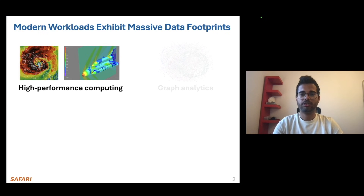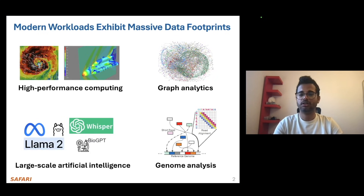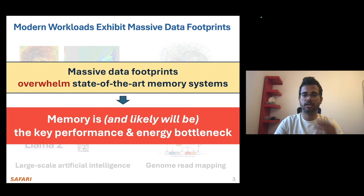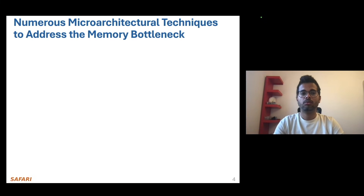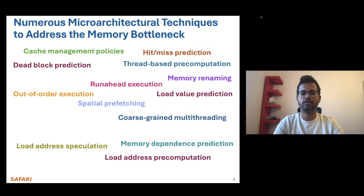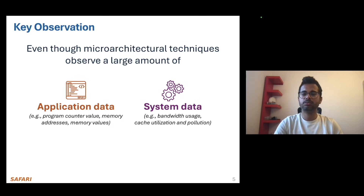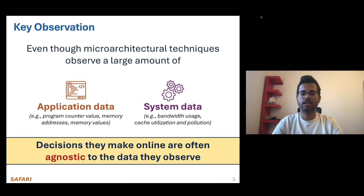Many modern workloads stemming from key application domains such as high performance computing, graph analytics, and genome sequence processing exhibit a massive data footprint that easily overwhelms the capabilities of even state-of-the-art memory systems. As a result, memory is and will likely continue to be the key performance and energy efficiency bottleneck in compute systems.